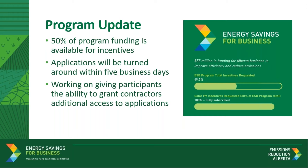We encourage everyone to continue submitting applications to the ESB program. We have almost 300 measures available for incentives, including waste energy recovery, organic Rankine cycle, and increased incentives for smaller CHP sizes, both of which were added earlier this week. Please continue to check the website for program updates and new additions to the eligible measures list. You can submit multiple applications for your sites as long as you're under the project and parent company limits. The program implementation team is currently working on giving participants the ability to grant their contractors additional access to their applications, with future changes aimed at giving contractors more flexibility while ensuring participants maintain proper control.